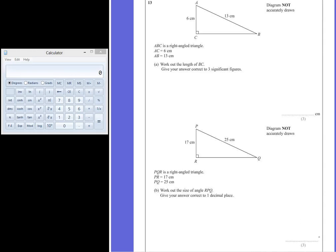Question 13. ABC is a right angle triangle. The diagram is not accurately drawn. AC is 6cm and AB is 13cm.